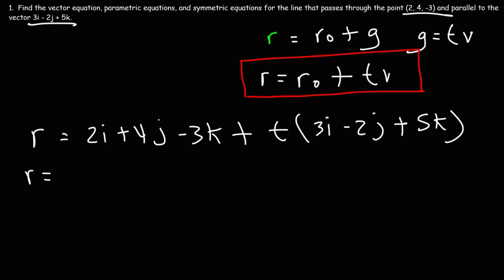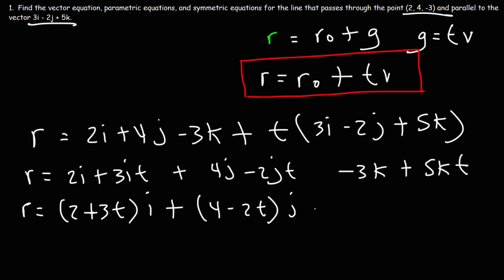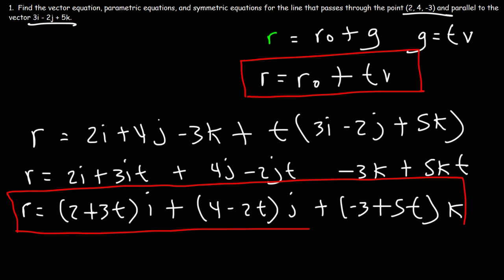Distributing t and pairing up the i, j, and k components: 2i plus 3ti, then 4j minus 2tj, then minus 3k plus 5tk. Factoring out i, j, and k gives us (2 plus 3t)i plus (4 minus 2t)j plus (negative 3 plus 5t)k. This is the vector equation of the line.